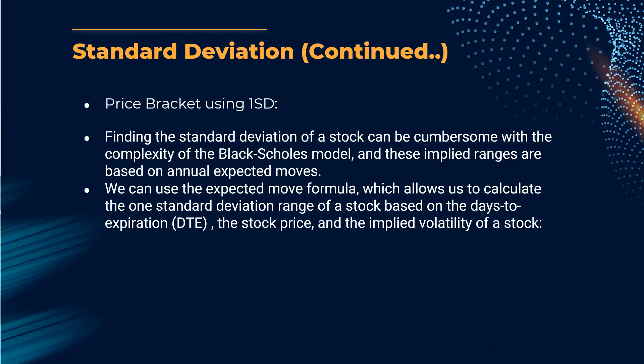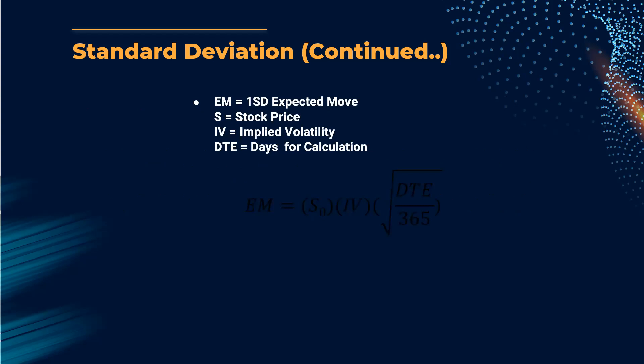We are using standard deviation to find the price bracket. Finding standard deviation using the old Black-Scholes model can be cumbersome. Instead, we use the expected move formula, which calculates one standard deviation based on the stock price, days to expiration, and IV. Since we are forecasting weekly levels, we use seven days as DTE. The expected move (EM) equals stock price (S₀) multiplied by IV multiplied by the square root of DTE divided by 365.